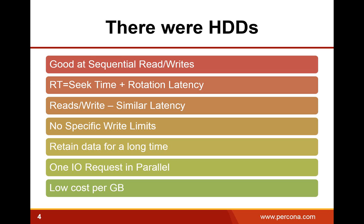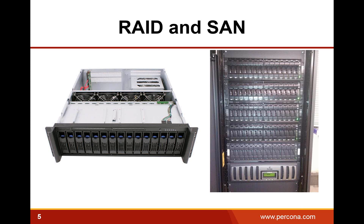In terms of parallel processing, hard drives process only one IO request at a time. Some hard drives support something called request tagging, like NCQ, but that means you process them one after another. Another very important property of hard drives is a pretty low cost per gigabyte, which makes them very good if you have to store large amounts of data.